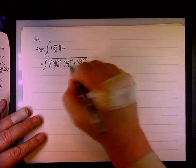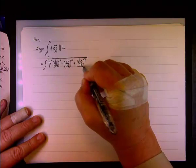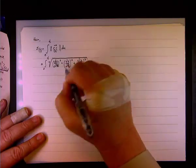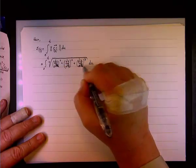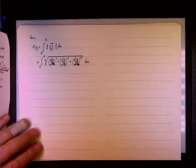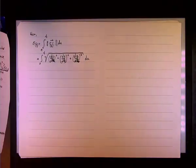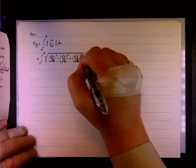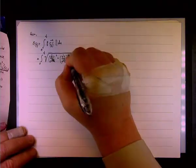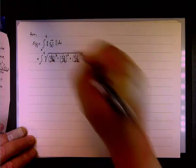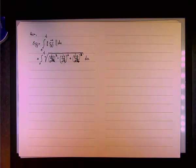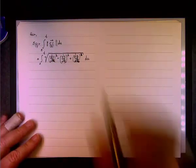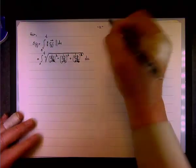And actually, it will be du, du, and du, because the variable t becomes the upper boundary, and the variable of integration is du. So, dx/du, dy/du, dz/du. It's all squared. That's Kyle's bad influence here.